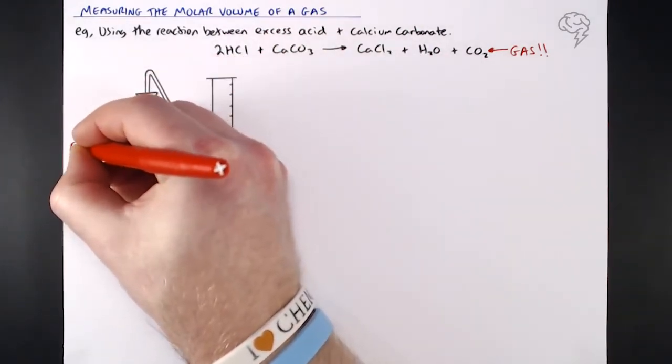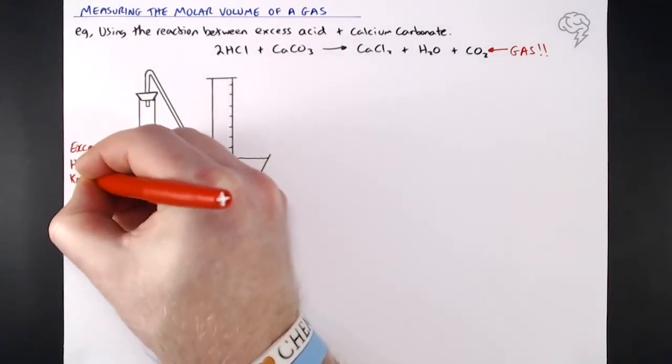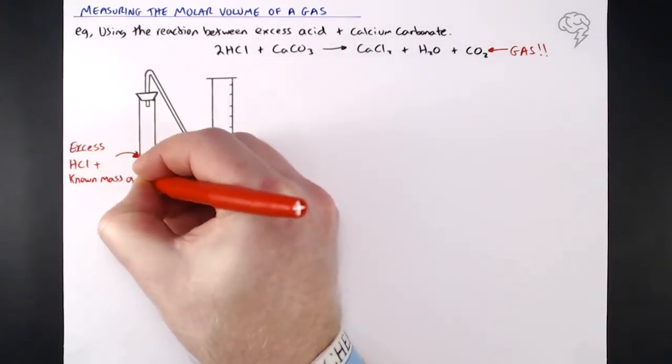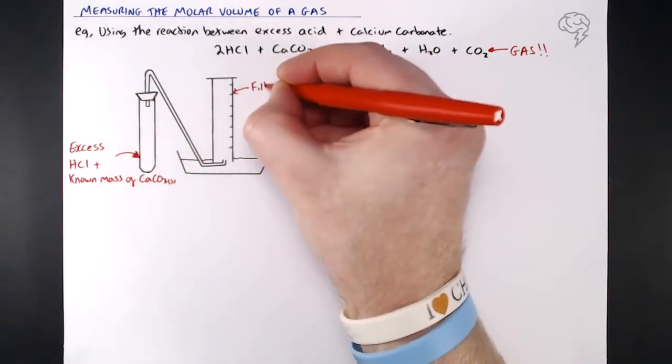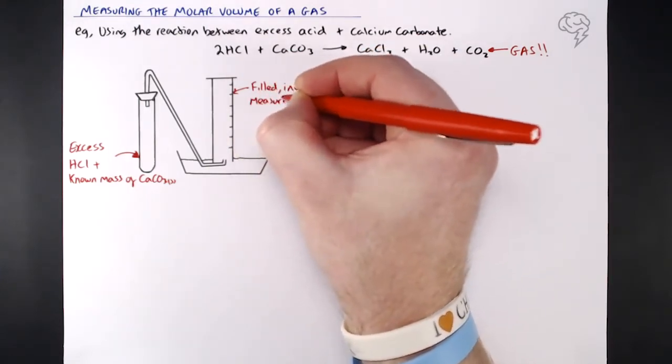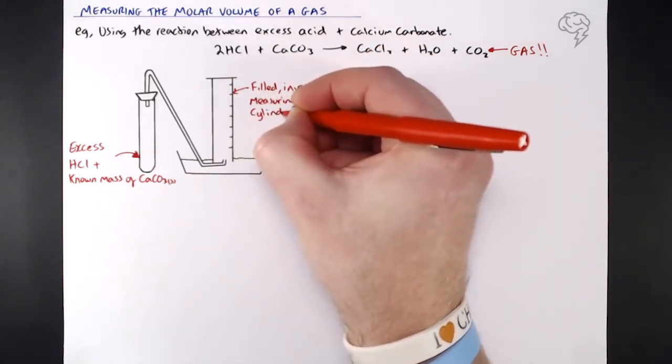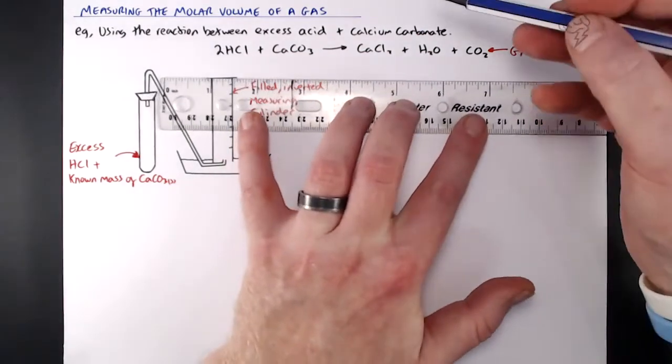This is what we've got: excess hydrochloric acid and a known mass of calcium carbonate in our boiling tube. That's sealed airtight with a bung, and then of course that gas will be delivered into this filled with water inverted measuring cylinder. The gas comes through there, bubbles through, displaces the water, and we can measure the volume of gas given off from the entirety of the reaction.